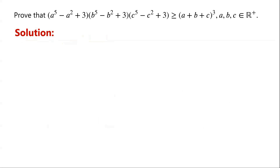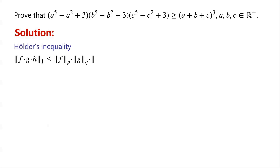One way for proving the inequality might be to expand both sides and then simplify them. But this might be complicated. We notice that the left side is a product of three items, and the right side is a cube number. This reminds us of considering Hölder's inequality with three functions.